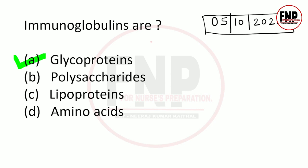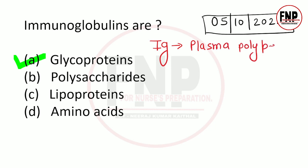Hamaari body ke andar jo antibodies hooti hain, unhye hi aap immunoglobulin ke naam se jaante hain. Immunoglobulin ko hum short mein Ig likh saktay hain. Agar examiner puchhe ki immunoglobulin kya hai, toh sabse pehle batayenge ki it is a plasma polypeptide. Specifically puchha jaye toh yeh glycoprotein hai - these are the glycoprotein molecules.